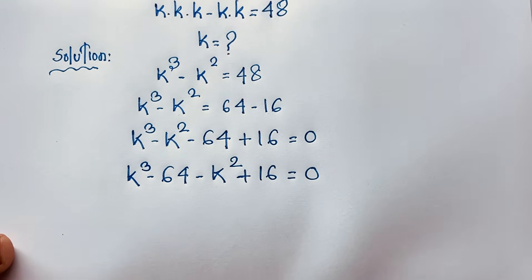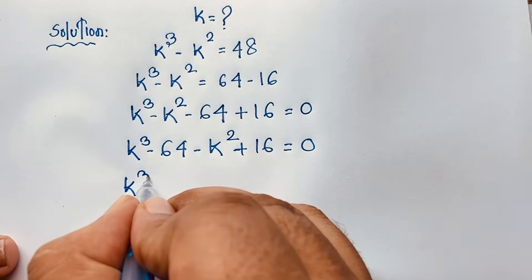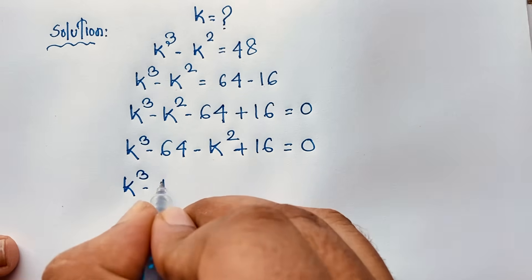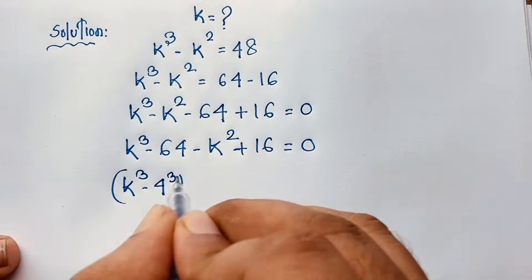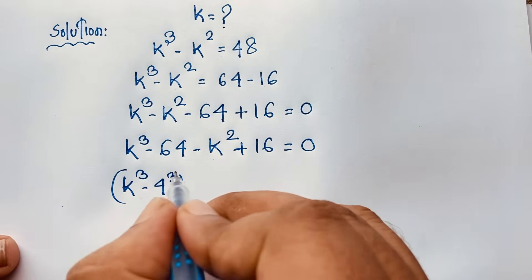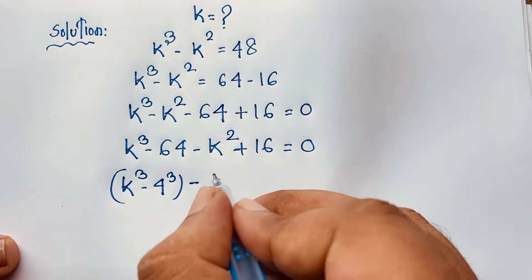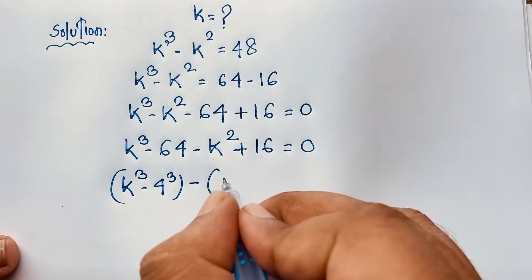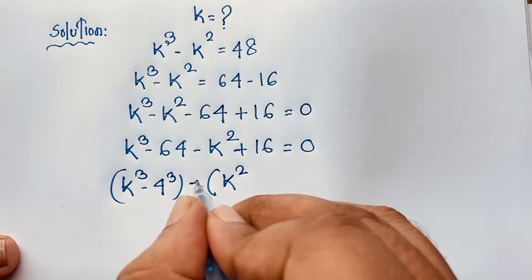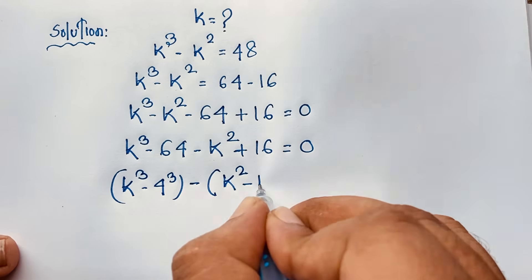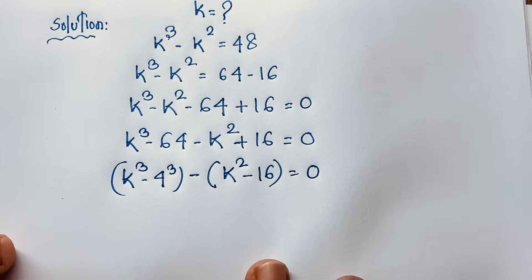I will solve this step by step. Here, k to the power 3 minus 64 is k to the power 3 minus 4 to the power 3, since 4 cubed is 64. Taking the negative sign as common, we get negative of k to the power 2 minus 16 equals 0.